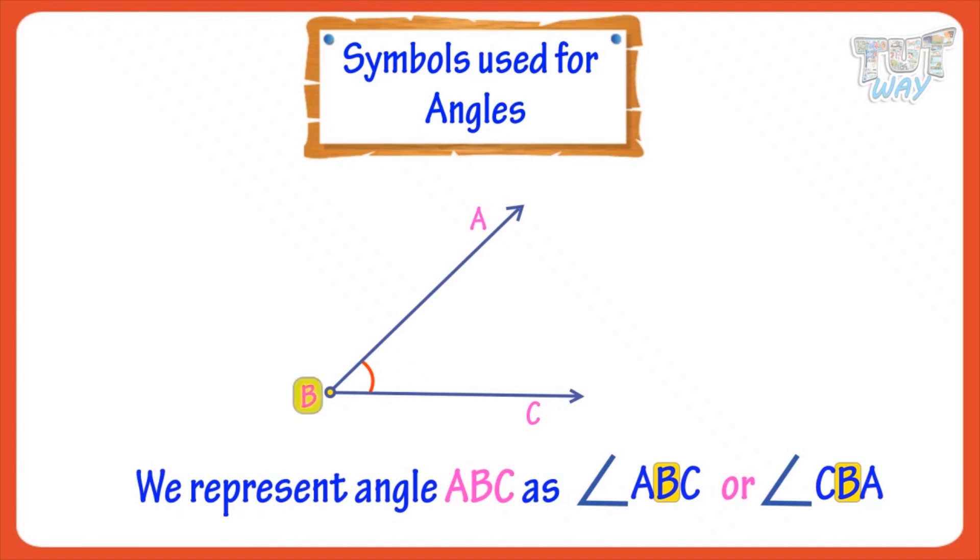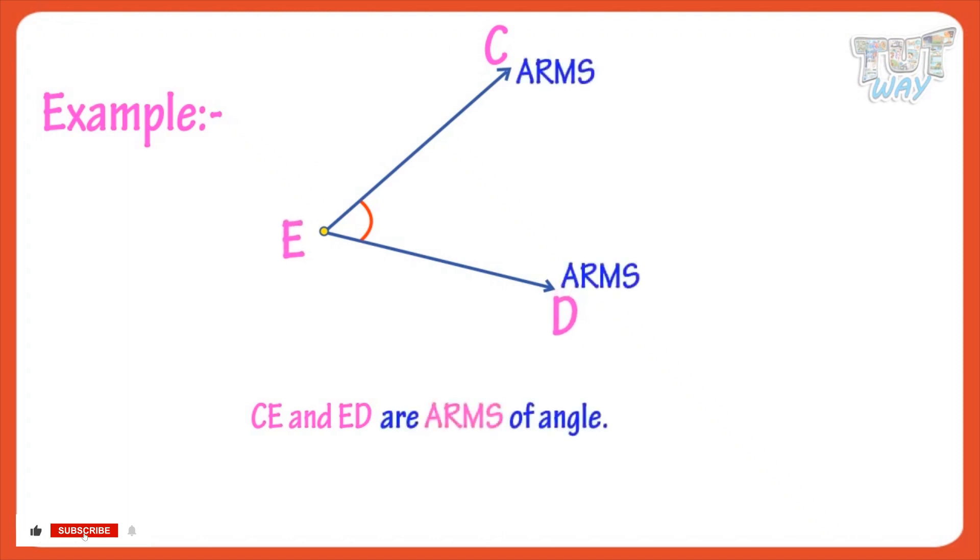Let's see more examples. Here, CE and ED are arms of an angle, and E is the vertex. And CED is the angle represented like this.